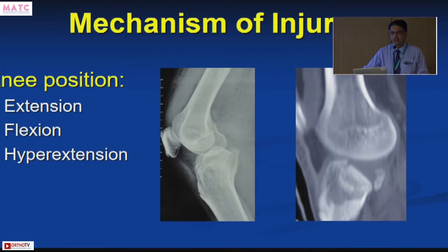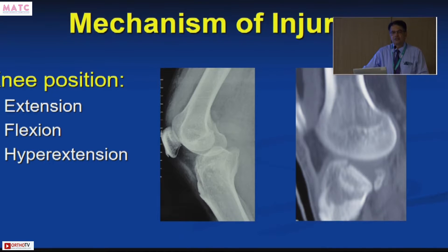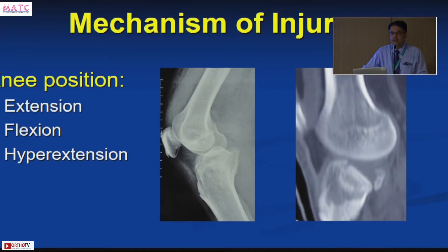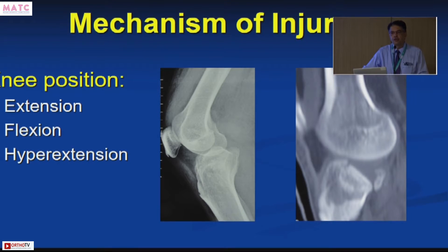Whether the knee is in extension or flexion determines whether there will be more involvement of the anterior or posterior half of the tibia. The emphasis on knowing the mechanism of injury is that for stable fixation with less chance of failure, you need to neutralize the deforming forces. Unless you know the direction of the deforming force, you do not know where to place your implant.